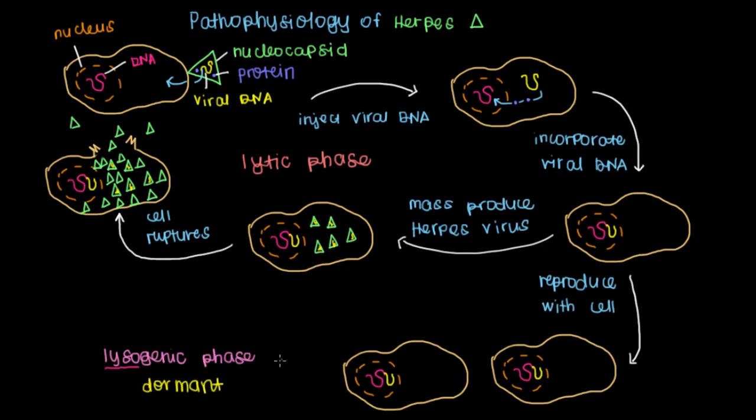Now an important thing about herpes is that it likes to be dormant in nerve cell bodies. And the term for nerve cell bodies is ganglion. Or if you're talking about multiple ganglions, there's no such word, so instead we say ganglia. And in fact, we know what specific ganglion or ganglia herpes likes to go into the lysogenic phase in.